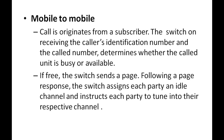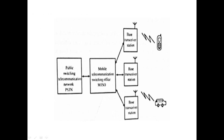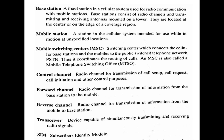A block diagram shows the various components used in call processing. The blocks are: Public Switched Telephone Network (PSTN), Mobile Telecommunication Switching Network, Mobile Telecommunication Switching Office (MTSO), and base transceiver.